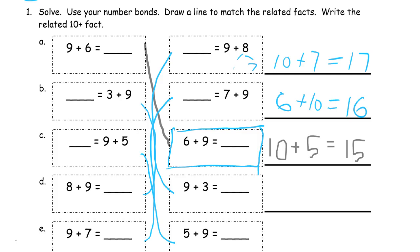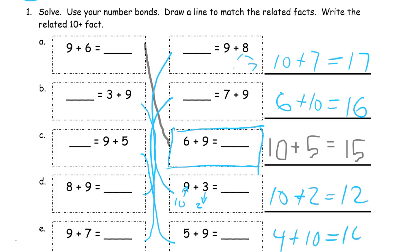Nine plus three — you can think of that as a ten plus two, right? You add one to the nine and take one away from the three. So this is ten and that's two. This is the mental trick for adding nines. Ten plus two is twelve. And five plus nine is four plus ten — fourteen.